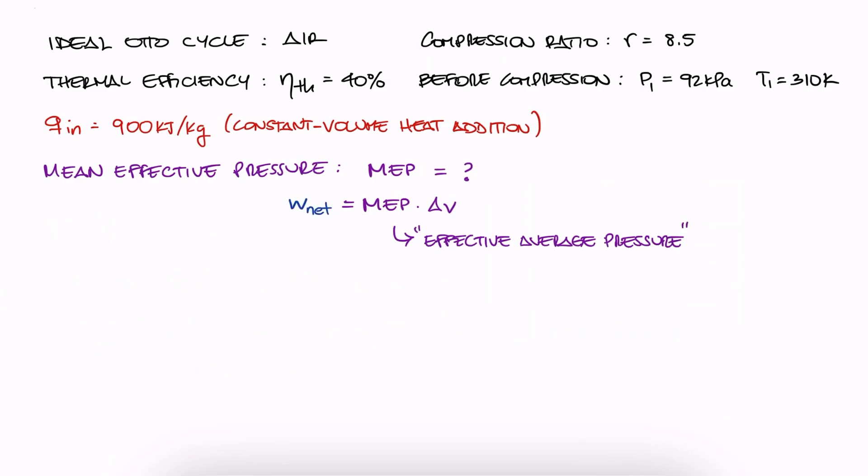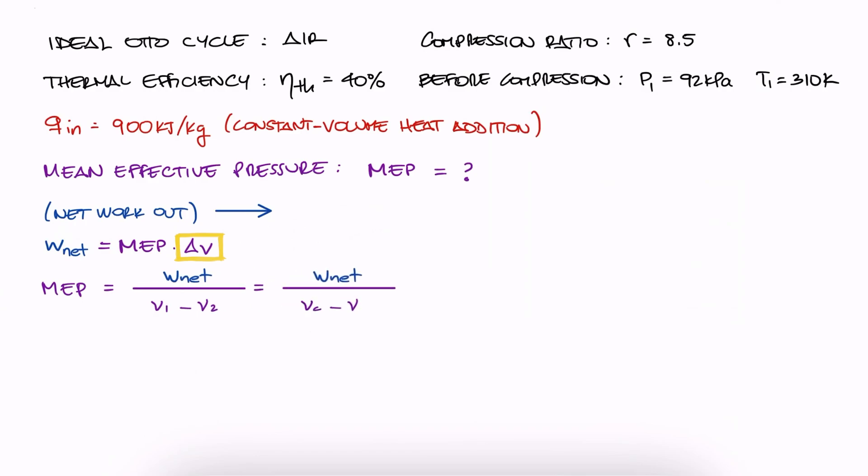So if W net is this average pressure times delta V, this MEP value is equal to W net over V, or V1 minus V2, or V4 minus V3. It doesn't matter which since V1 and V4 are the same just like V2 and V3 are.